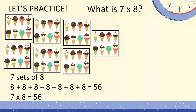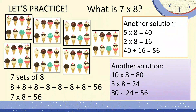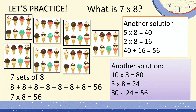If you forgot 7 times 8, here's another strategy: multiply 5 and 8, which is 40, and then 2 times 8, which is 16, and add the products — that's 56. Or use subtraction: 10 times 8 is 80, and 3 times 8 is 24, so subtract the products — 80 minus 24 is 56. These are just sample solutions; you can use whichever numbers you know to find the product.